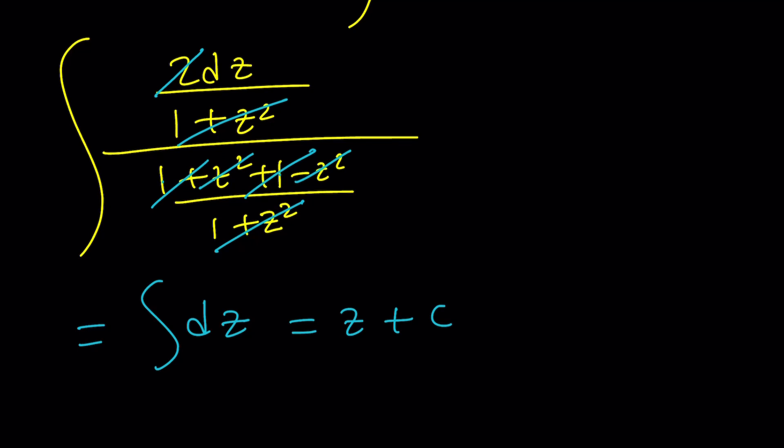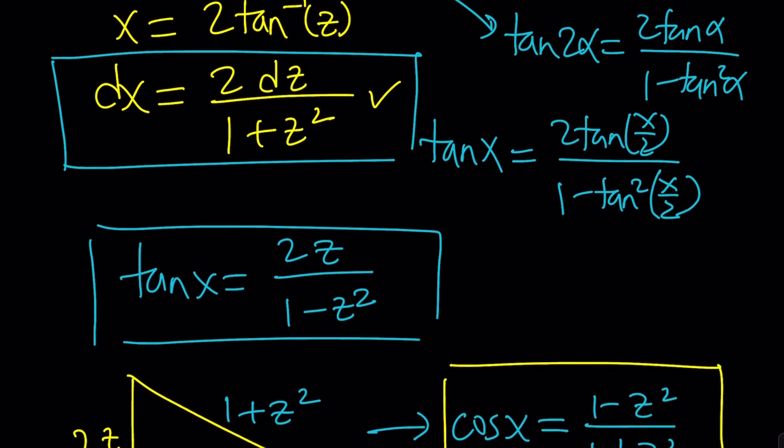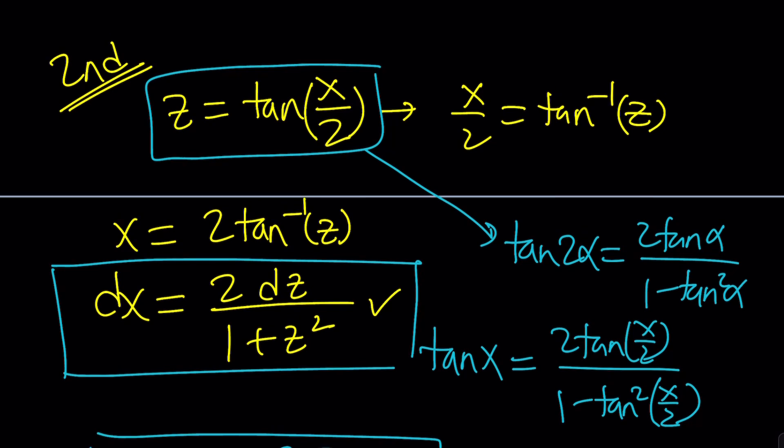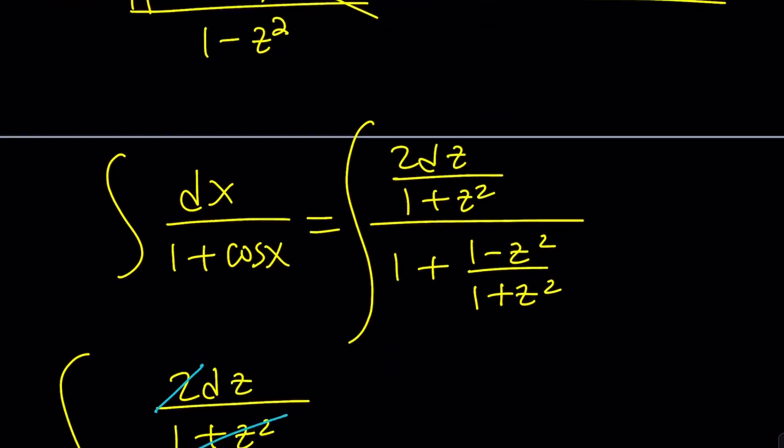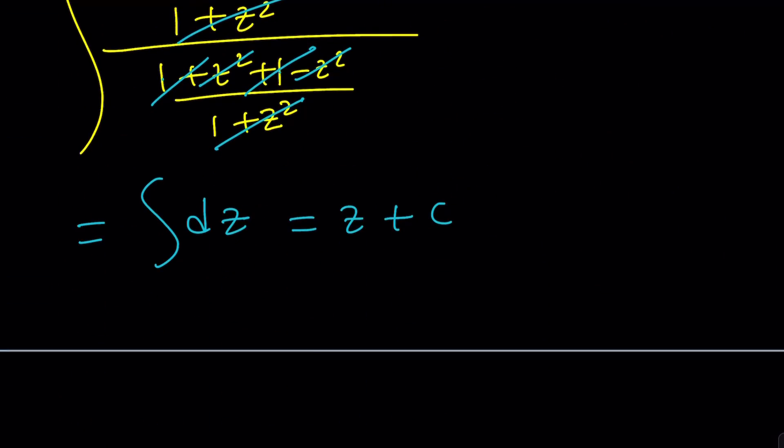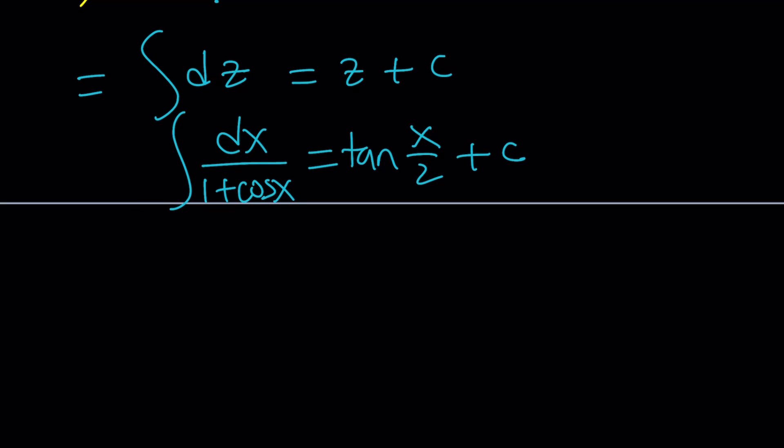We end up with the integral of dz, which is z plus a constant c. But what is z? Back to basics. Z is tan x over 2. So the answer is actually tangent x over 2 plus c. This is kind of like the best case scenario for Weierstrass substitution. It's kind of hard to say for me. But as you can see, the answer is fairly simple.